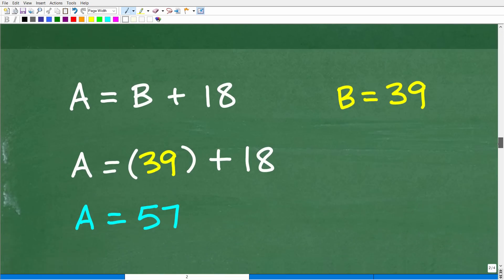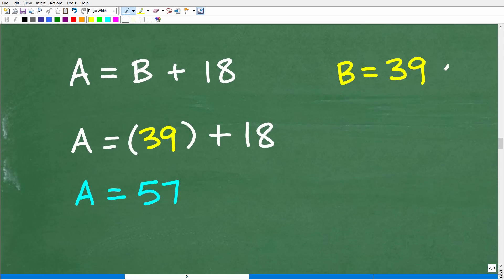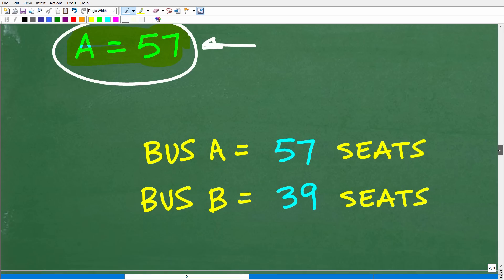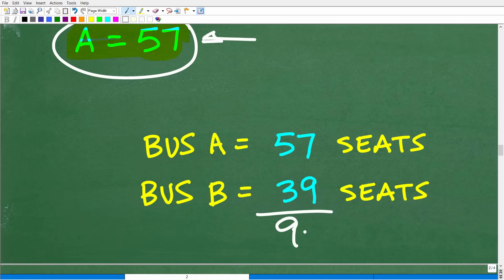So we're almost done here. So we already, I think, did the hard part. So we solved for B. B is equal to 39. We used the substitution method. So what we can do is go back to either one of the equations in the system. This is clearly the easiest equation to go to to get our value for A. So A is equal to B plus 18. Now that we know that B is equal to 39, I simply can replace this B with 39 and then add 18 to it. So 39 plus 18 is 57. So bus A, which, of course, remember, in the problem, has more seats than bus B. So bus A has 57 seats. And together, they have 96 seats.